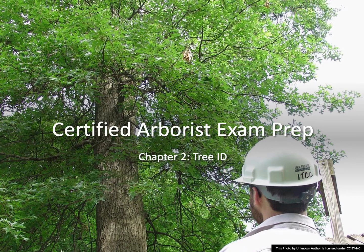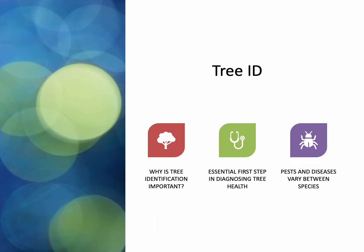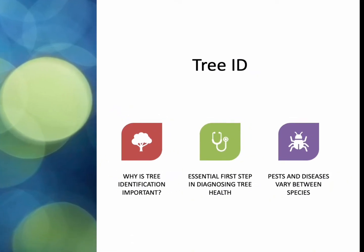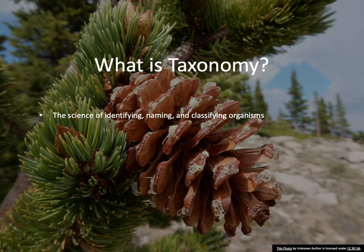Welcome back to another exciting edition of Certified Arborist Exam Prep. Today we're going to talk about Chapter 2, Tree Identification. So why is tree identification important? It's the central first step in diagnosing tree health. Pests and disease vary between species, and that's why taxonomy — the science of identifying and naming plants — is so crucial. Knowing the tree that you're dealing with is the first step in proper tree care.